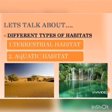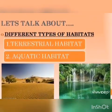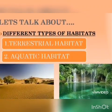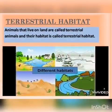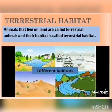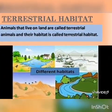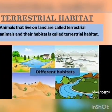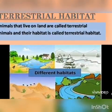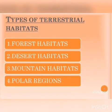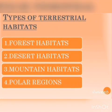Habitats are of two types. First is terrestrial habitat and second is aquatic habitat. Animals that live on land are called terrestrial animals and they live in terrestrial habitats. Terrestrial habitats are further of four types: first is forest habitat, second is desert habitat, third is mountain habitat, and fourth is polar regions.